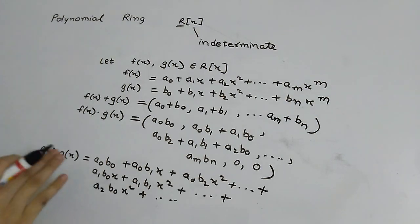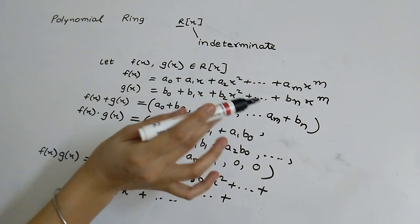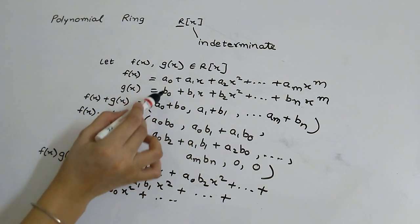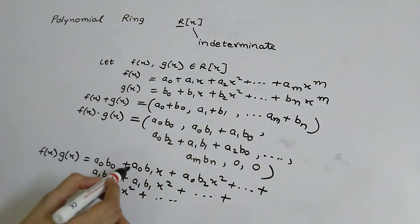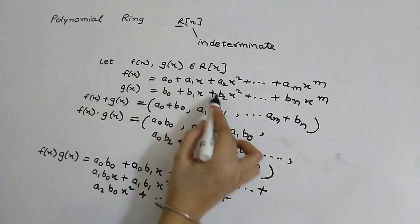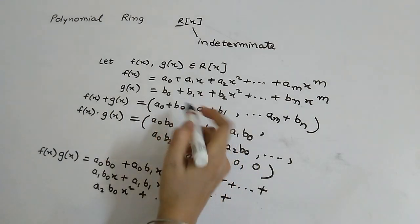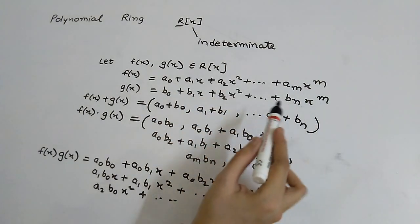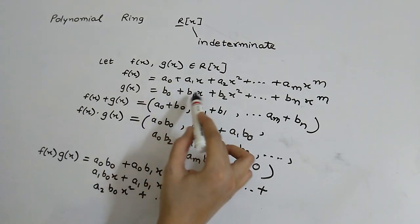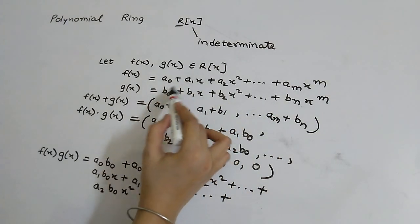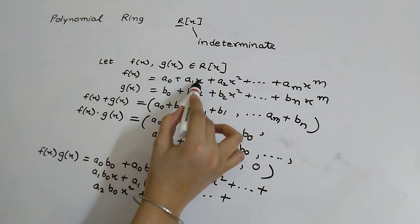To explain how this multiplication works: f(x) · g(x) is computed by multiplying a0 with all coefficients of g(x) — so a0·b0 is the first term, then a0·b1·x, then a0·b2·x^2, and so on. Then we multiply a1·x with each term of g(x), giving a1·b0·x, then a1·b1·x^2.